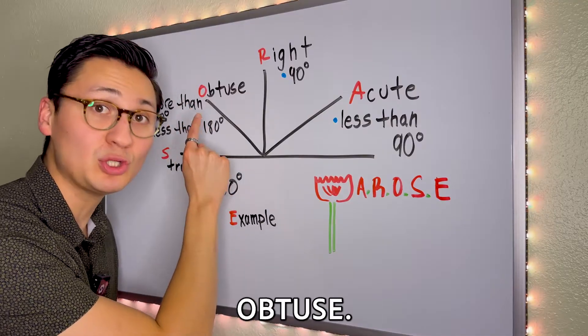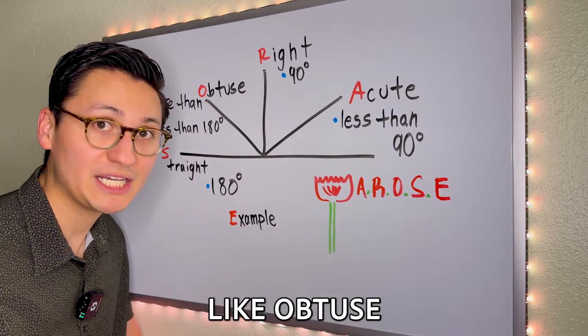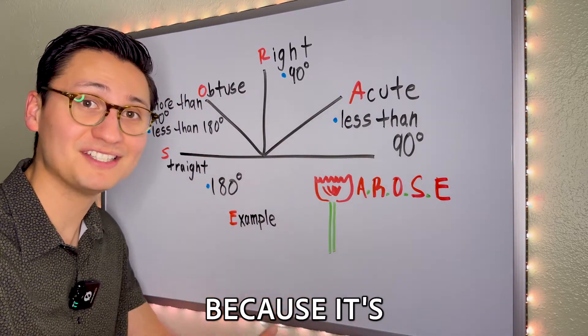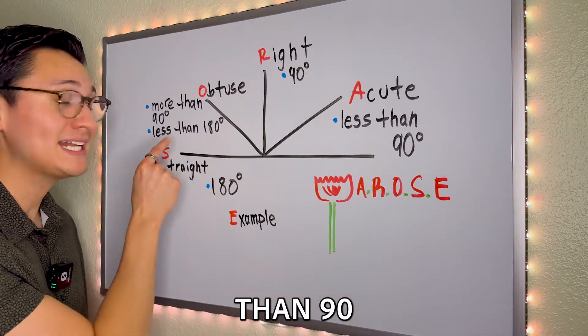The O stands for obtuse. I like to say obtuse because it's so big. It is more than 90 degrees but less than 180 degrees.